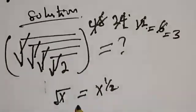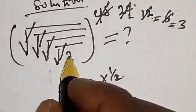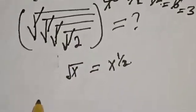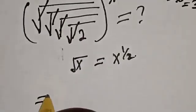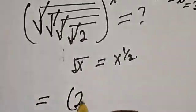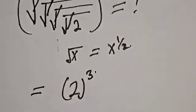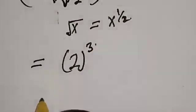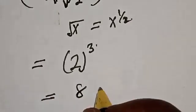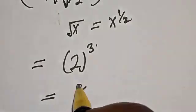Now we are left with 2 raised to the power of 3, and this is equal to 8. Because 2 raised to the power 3 is 2 times 2 times 2.